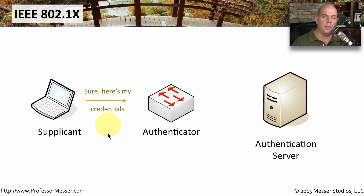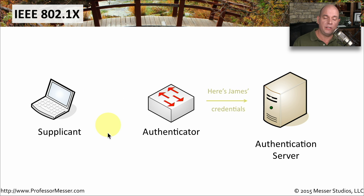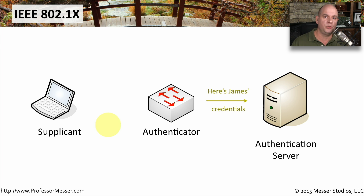The authenticator takes the authentication server's request and asks the supplicant to provide authentication details. At this point, you'll probably get a message on your screen to input your username, password, or any other credentials. Those credentials are then sent to the authenticator, which passes them on to the authentication server, who checks the credentials and makes sure all of that information matches what it should be in the authentication server files.